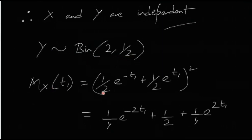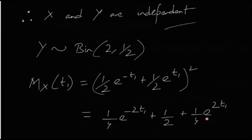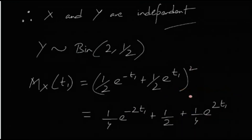The MGF of X does not look like a familiar MGF whose distribution we know directly. So let us see what we can do. Expanding the square, we get: 1/4 · e^(−2t1) + 1/2 + 1/4 · e^(2t1). This is just expanding the square.